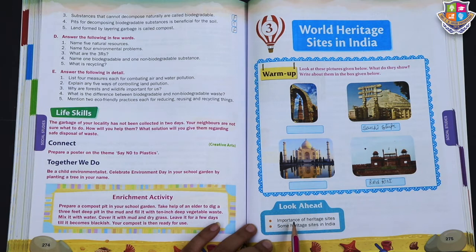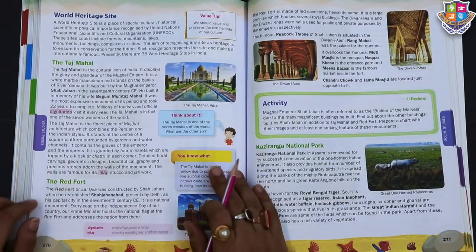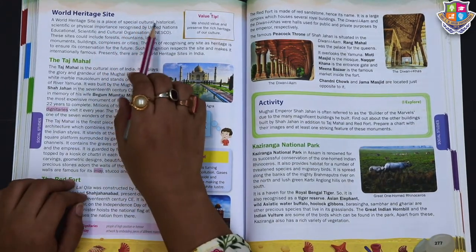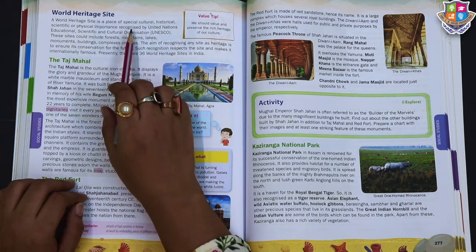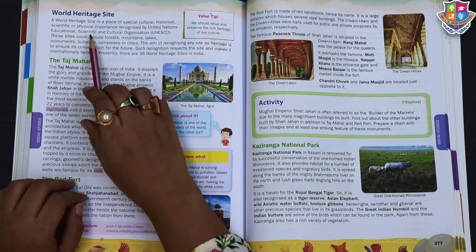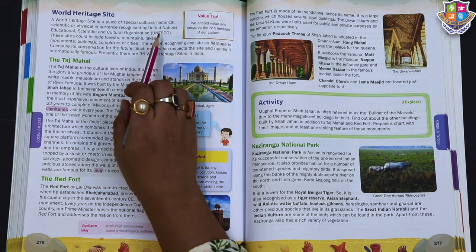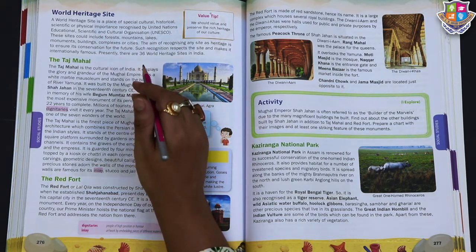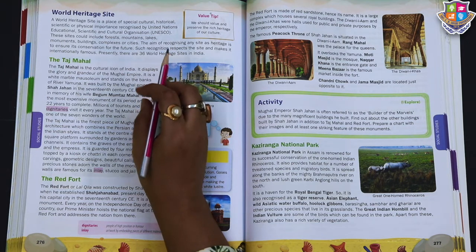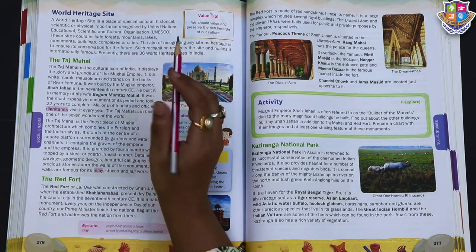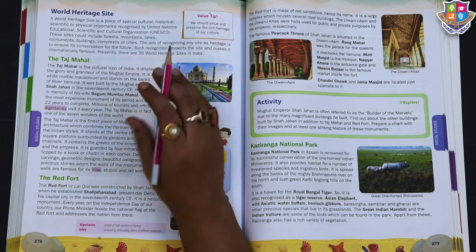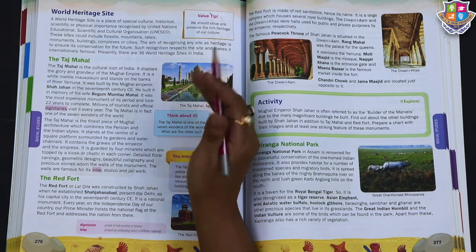In this chapter we are going to learn about the importance of heritage sites and some heritage sites in India. A world heritage site is a place of special cultural, historical, scientific, or physical importance. The main aim of recognizing a world heritage site is to ensure its conservation for the future, because it is a beauty of our country.